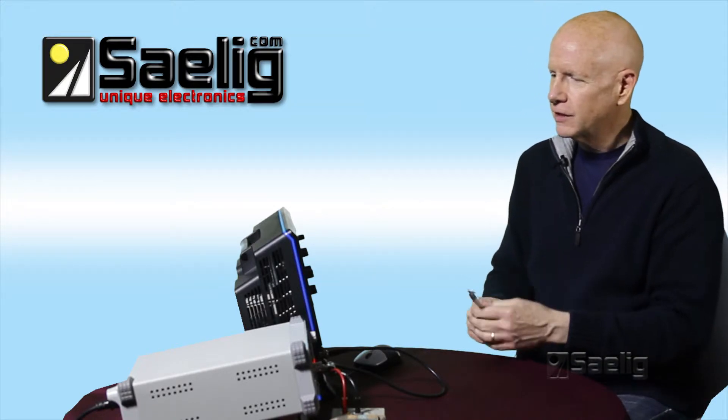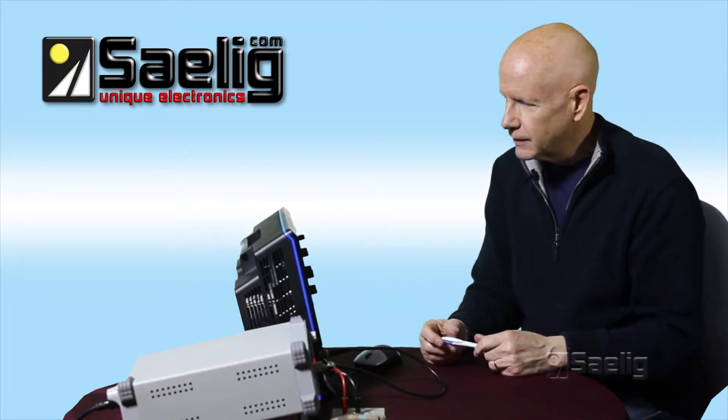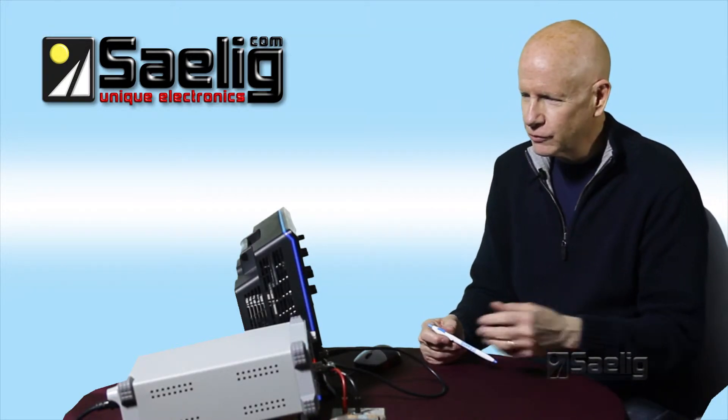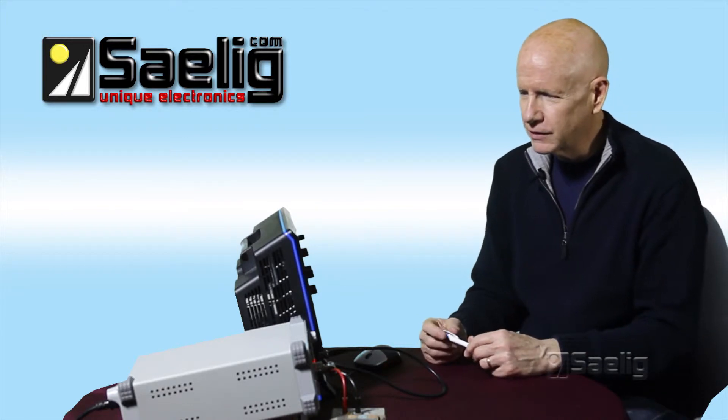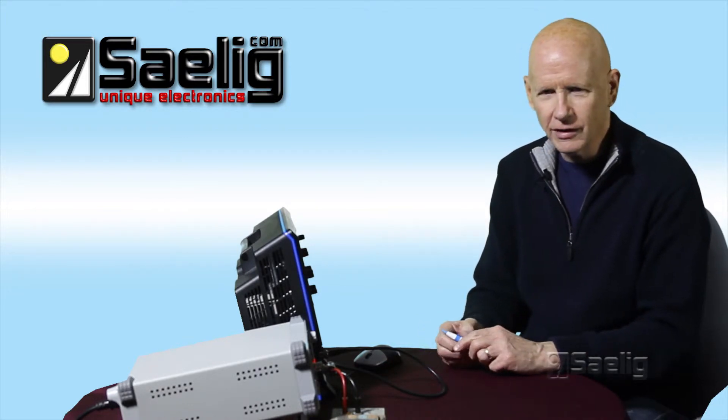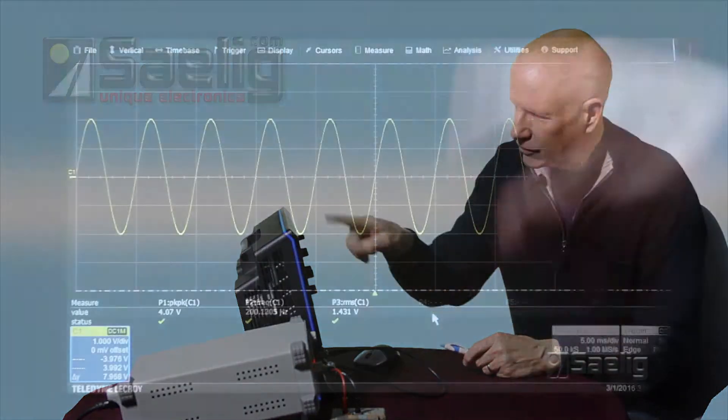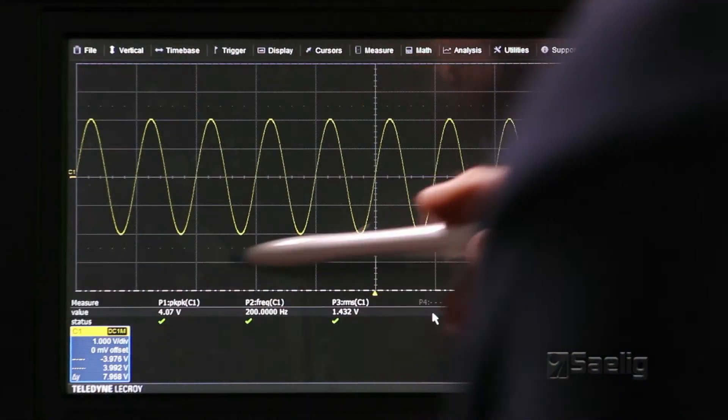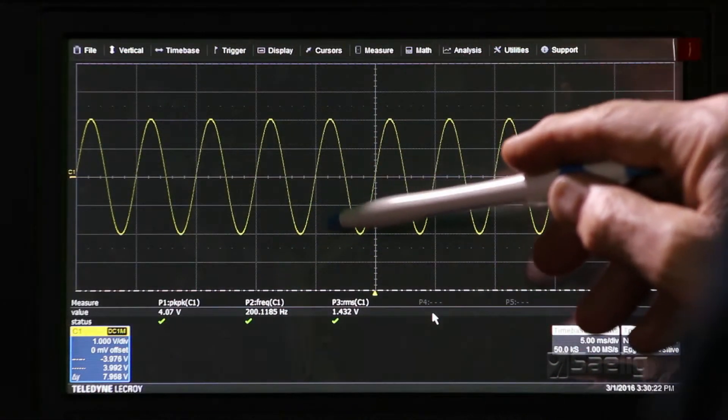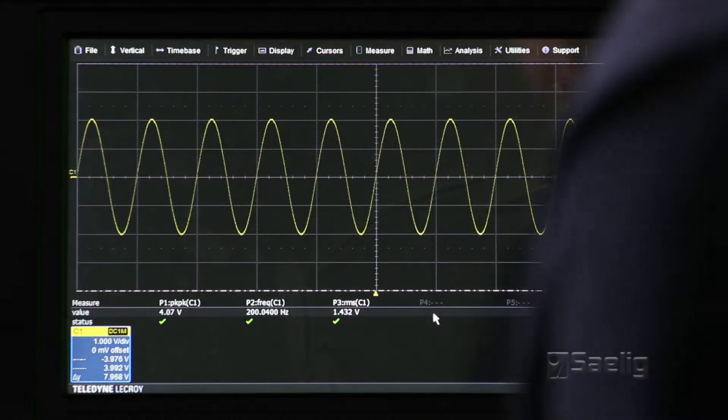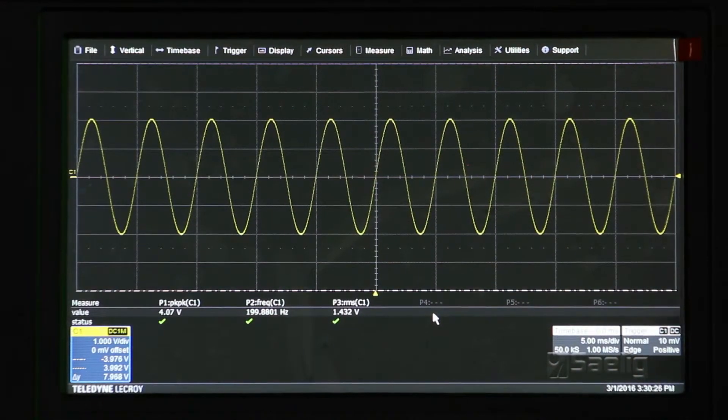So you can see it here. And the eyeball method is the first way. If you had scopes years and years ago, you didn't have any cursors or any automatic measurements and you had to kind of look at the Graticule and say, well, we've got one volt per division. There's four divisions. So we're pretty close to four volts there. And so that's basically all you could do.